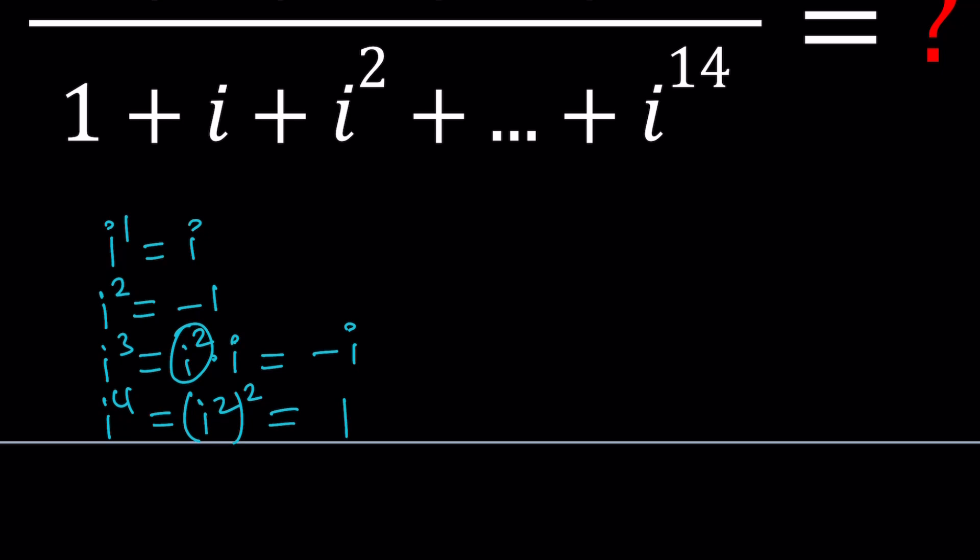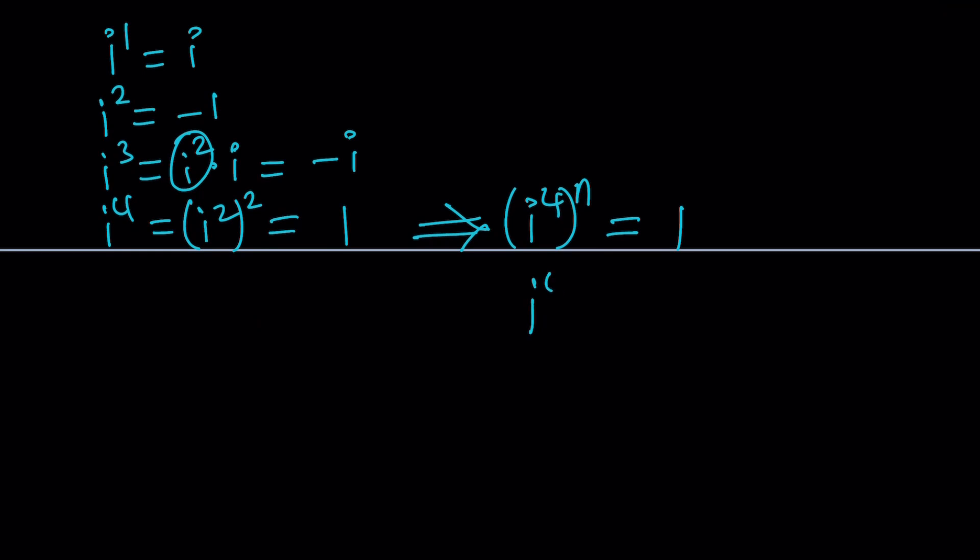So powers of i basically cycle. i, negative 1, negative i, 1. i, negative 1, negative i, 1. So on and so forth. In other words, since i to the fourth is 1, if you raise this to any integer power, you're still going to get 1. So when the power of i is a multiple of 4, you get 1, and this just keeps repeating.